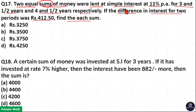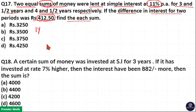Here the sum is equal and the rate is equal. Only the time period is varying — that is 3.5 years and 4.5 years. So the difference between the number of years is 4.5 minus 3.5, which equals 1 year. And the difference in interest is equal to 412.5.